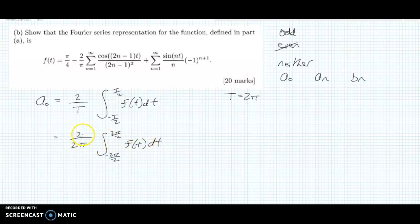When we cancel here, you see 2 cancels here and here, so we end up with 1 over π. And then the 2's cancel here, we end up with a π here. The 2's cancel here, we end up with minus π down here, and here's our lower limit, F of T DT.